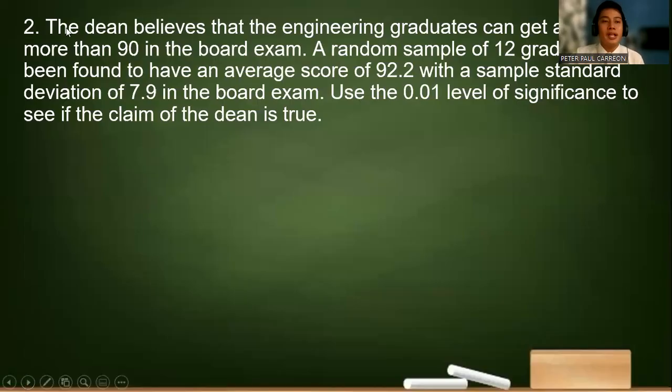Let's have this problem. The dean believes that the engineering graduates can get a score more than 90 in the board exam. A random sample of 12 graduates has been found to have an average score of 92.2 with a sample standard deviation of 7.9 in the board exam. We use the 0.01 level of significance or a 99% significance level to see if the claim of the dean is true.